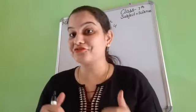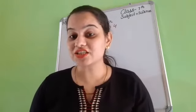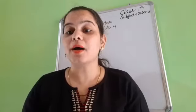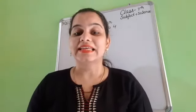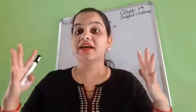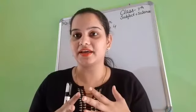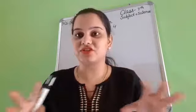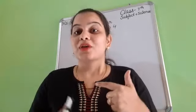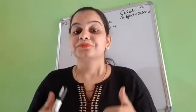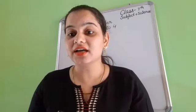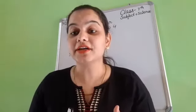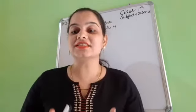Now let's start our first part, that is multiple choice questions. First question: a white cottony growth on a piece of bread which is left in a moist warm place for 2-3 days is? Now you will select which one is the correct answer. First, a parasite called cascata. B, a fungus called bread mold. C, an insectivorous plant called bladderwort. And D, none of these. Which one is correct? Yes, a fungus called bread mold.